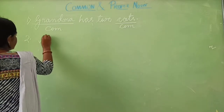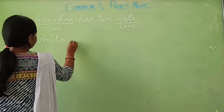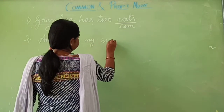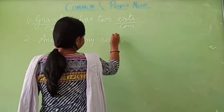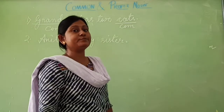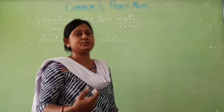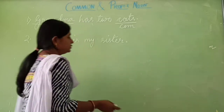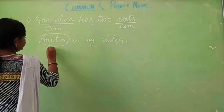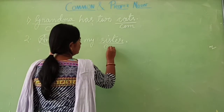Next sentence: Anita is my sister. Anita is the name of a person. All sisters are not Anita, so Anita is a special name — it is a proper noun. Circle it and write PRO. Sister is a common name, so it is a common noun.